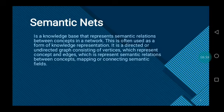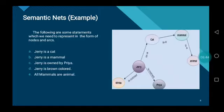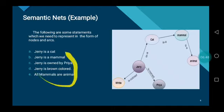A semantic network is a deliberate graphic representation that can be used to represent knowledge or support automated systems for reasoning about knowledge. Semantic nets is an alternative to predicate logic as a form of knowledge representation. The structure of semantic nets is shown graphically in terms of nodes and arcs connecting them. This is an example: the following statements need to be represented in the form of nodes and arcs. First: Jerry is a cat.